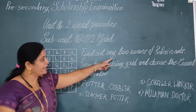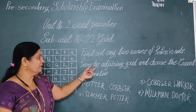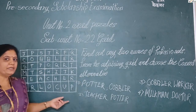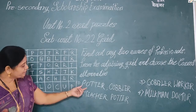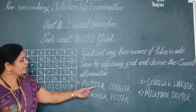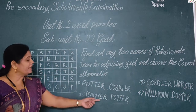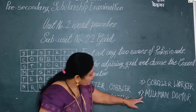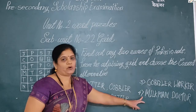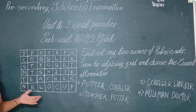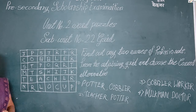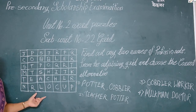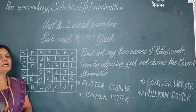Find out any two names of professionals in the grid and choose the correct alternative. The alternatives are: first, potter and potter; second, teacher and potter; third, potter and workers; and fourth, milkman and doctor. Observe the grid carefully and find out which option is correct.